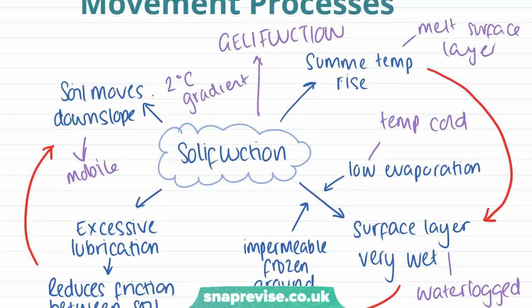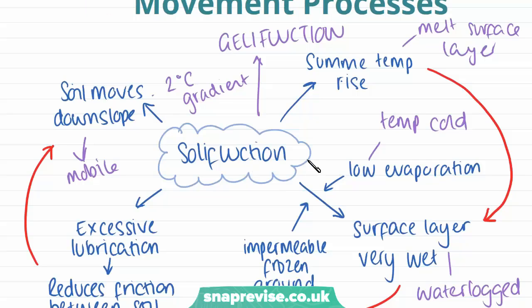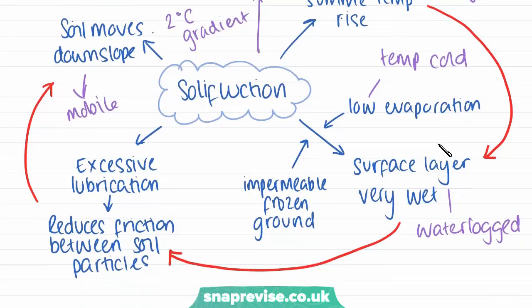To summarise solifluction: it occurs when temperatures rise in the summer, so the frozen water in the surface layer of the permafrost melts, making the surface layer very wet. This causes the soil particles to move around each other, and on slopes all the soil slides downslope.